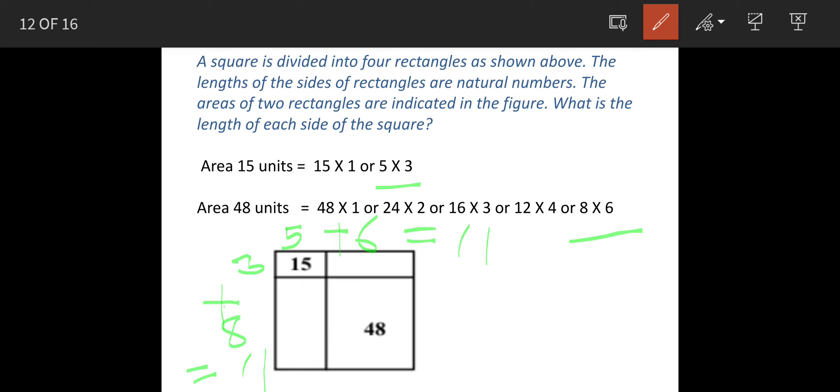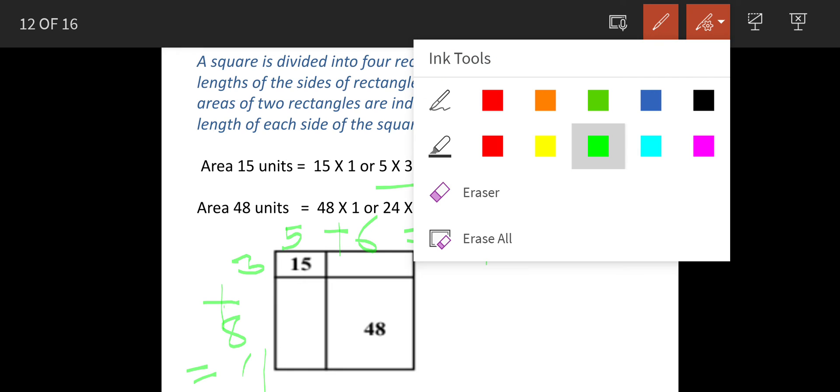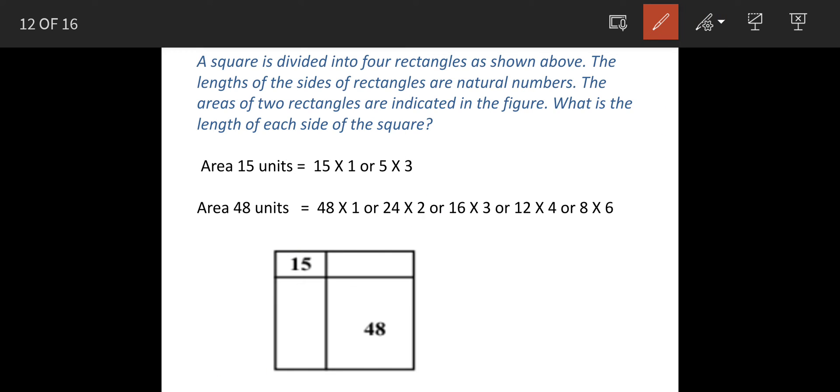So that means, if the sides of these two rectangles, if this rectangle is having side as 6 and 8 and this has side as 3 and 5, then we will have a square of 11 units by 11.